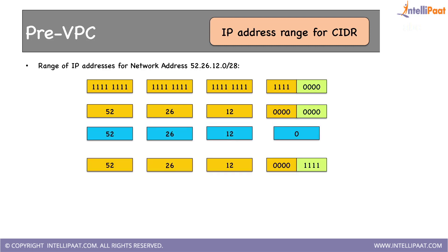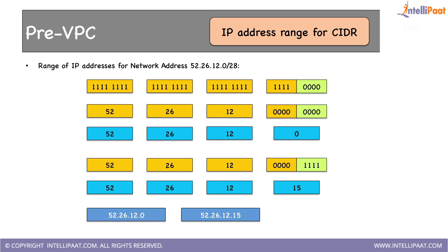For minimum, put all zeros in the last four bits — as usual. For maximum, keep everything as is and put all ones in the last four bits. The result is that the IP address range is 52.26.12.1 to 52.26.12.14 — you get only 14 usable machines here. I hope you understood how IP address ranges can be found when a network address is given. If you can't find the range by yourself, don't worry — tools are available and they're free. As long as you understand the concept, you're good.